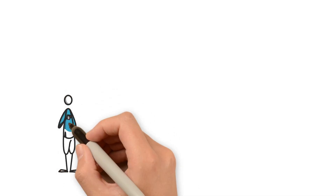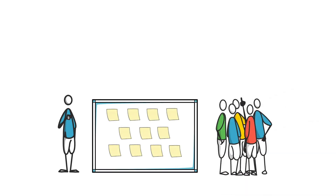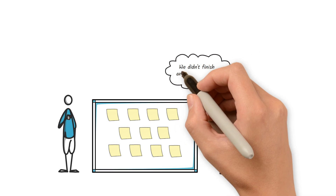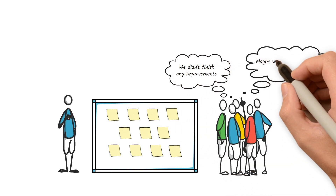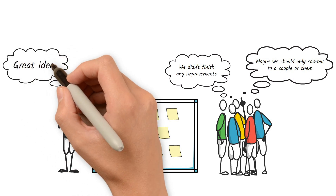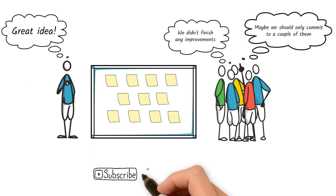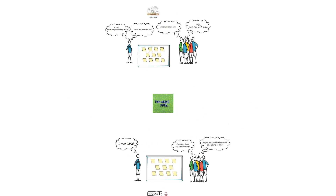Two weeks later, when they came back together for another sprint retrospective, none of the items from the prior retrospective were addressed. They realized they were not able to move the needle on any improvements because they were trying to solve too many things at the same time. Now that they came to the same conclusion on their own, they only committed to a couple of improvements in the next sprint retrospective. This time, they were able to accomplish it within the next sprint. In conclusion, sometimes teams need to come to their own conclusion in order to commit towards something, even if that means small failures. Thank you for watching and let me know in the comments below if you want to hear more Agile stories in future videos.